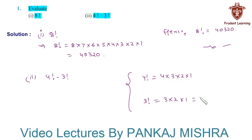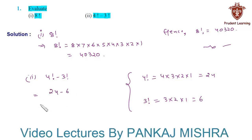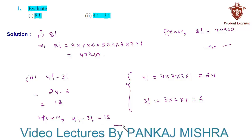3 × 2 × 1 is 6, and 4 × 3 × 2 × 1 is 24. Substituting the values of 4! and 3!, we have 24 minus 6, which equals 18. Hence we can say that 4 factorial minus 3 factorial is equal to 18. This completes our solution.